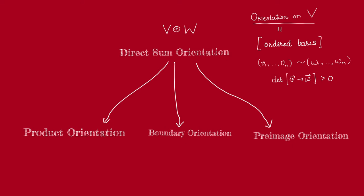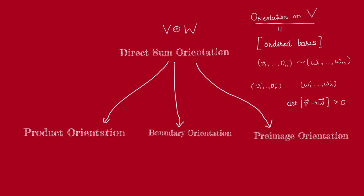Now, the question is: how many equivalence classes are there? How many possible choices of orientation are there? Well, intuitively, we know that on the plane there are two — clockwise and counterclockwise. But maybe there are more in higher dimensional spaces? It turns out the answer is no. We always just have two orientations. Because any two ordered bases that are not equivalent to a given ordered basis v1, ..., vn must be equivalent to each other.